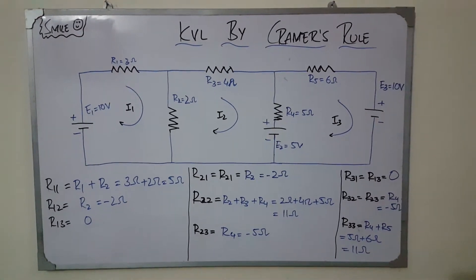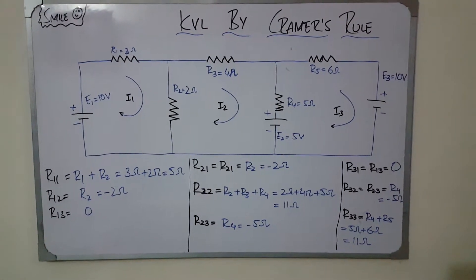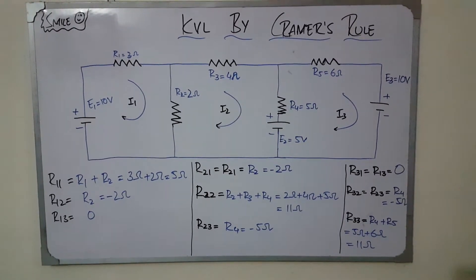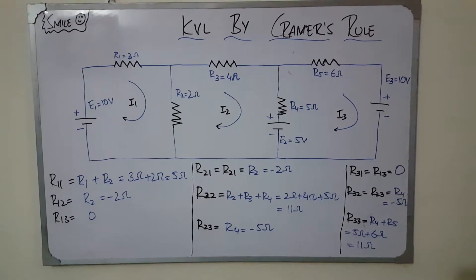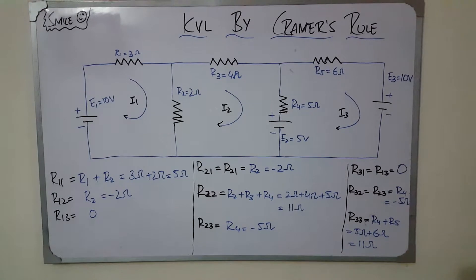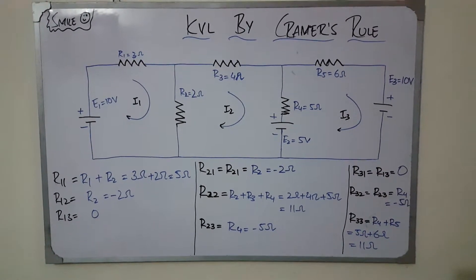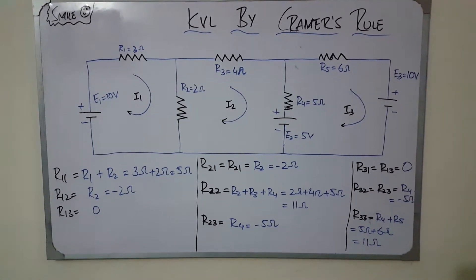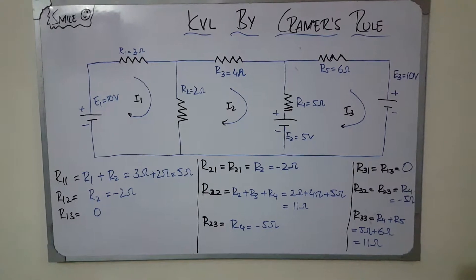R23 means the common resistor between loop two and loop three, which is R4. That value is added with a negative sign and becomes minus five. R31 equals R13, which is also zero. R32 equals R23, which is R4 equals minus five. For R33, there are two resistors R4 and another, and putting those values it becomes 11 ohms.